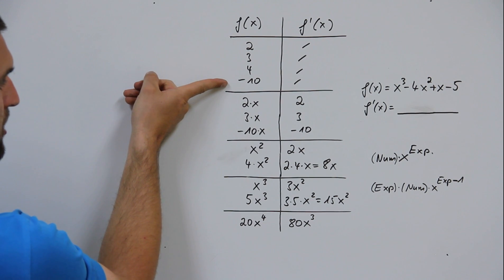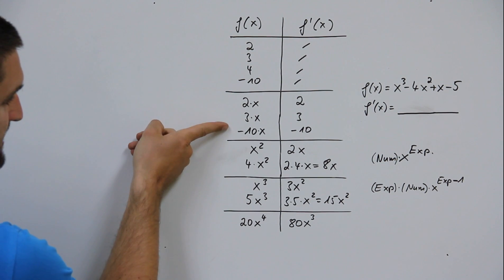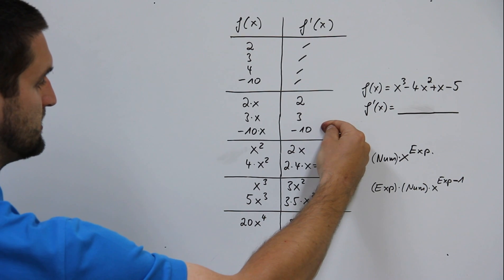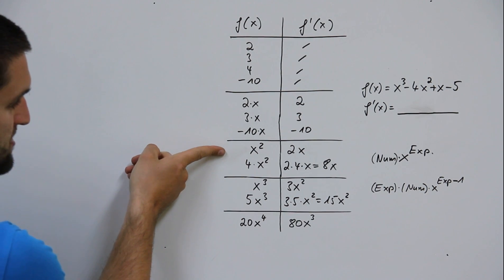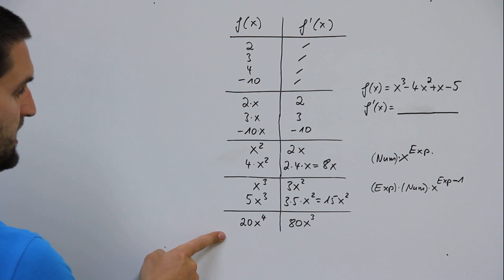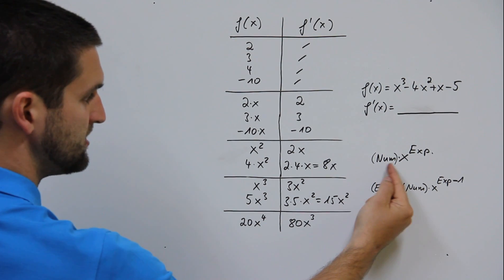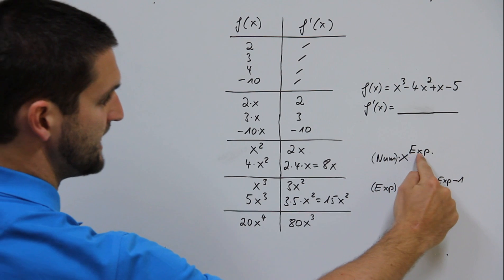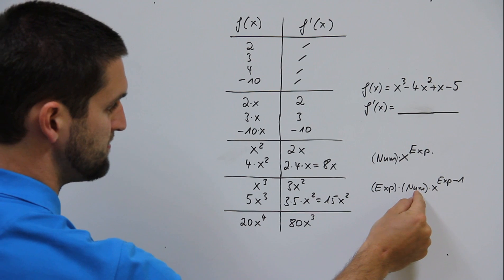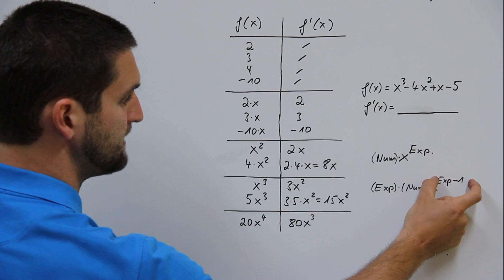If you have numbers standing alone, the first derivative is nothing. If you have a number times x, the first derivative is the number itself. If you have x to the power 2, x to the power 3, x to the power 4, etc., and a number in front of x, it's number times x to the power of an exponent. Take the exponent times the number standing in front, times x to the power exponent minus 1.